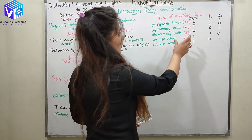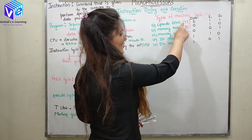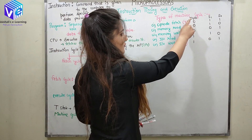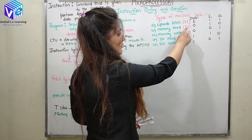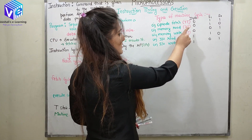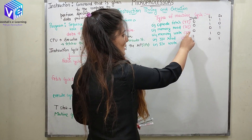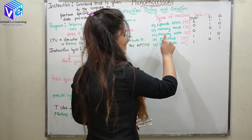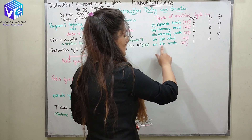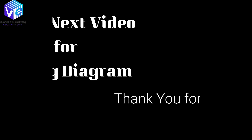Regarding T states: opcode fetch requires 4 T states. Memory read requires 3 T states. Memory write requires 3 T states. Input/output read and input/output write also each require 3 T states.